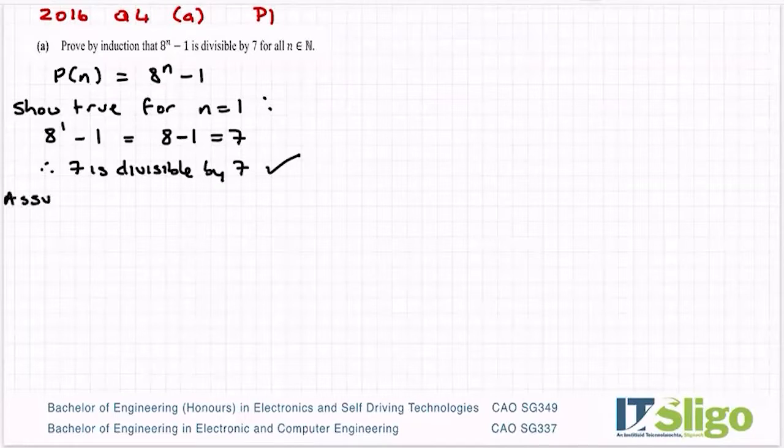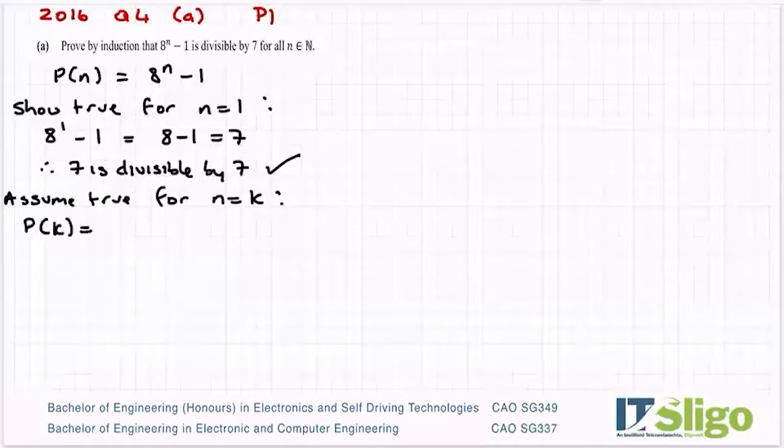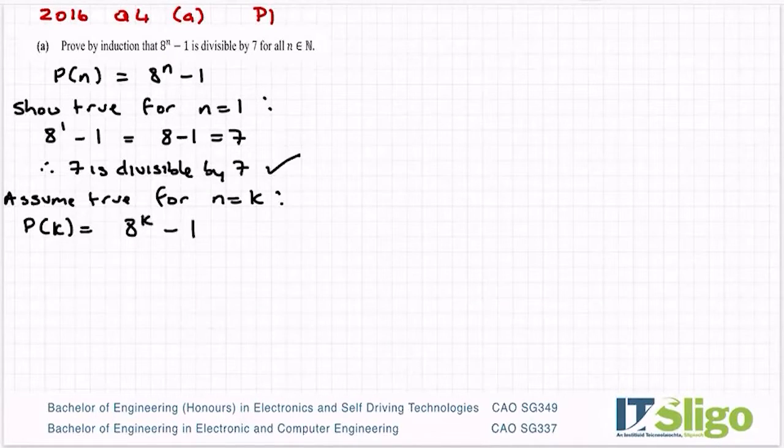I'm going to assume true for the case where n is equal to k which is just some random number k. So my statement then becomes 8 to the power of k minus 1. And what I want to say is that that's divisible by 7. So I'm going to say that is equal to 7m where m is a multiple of 7.